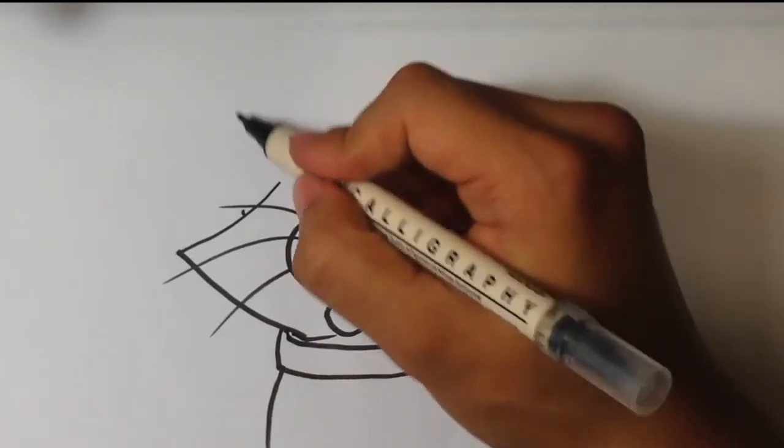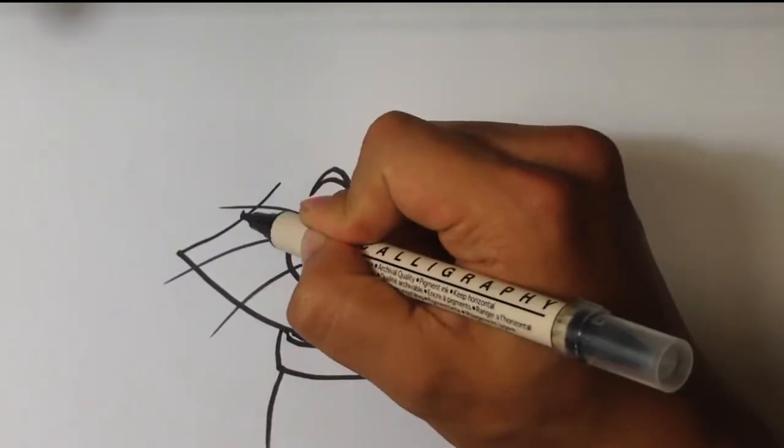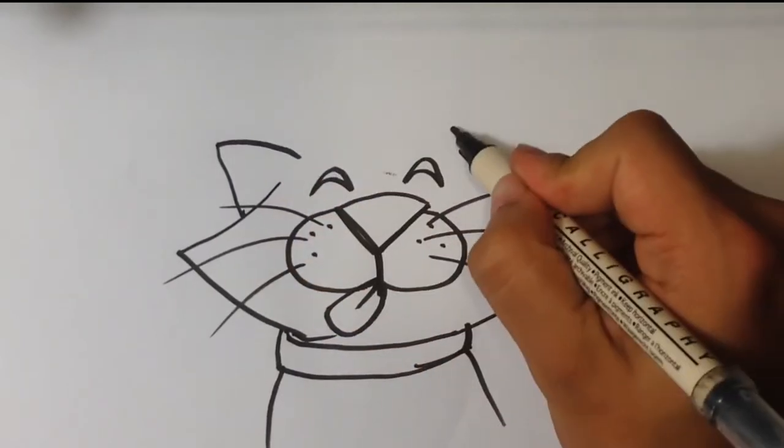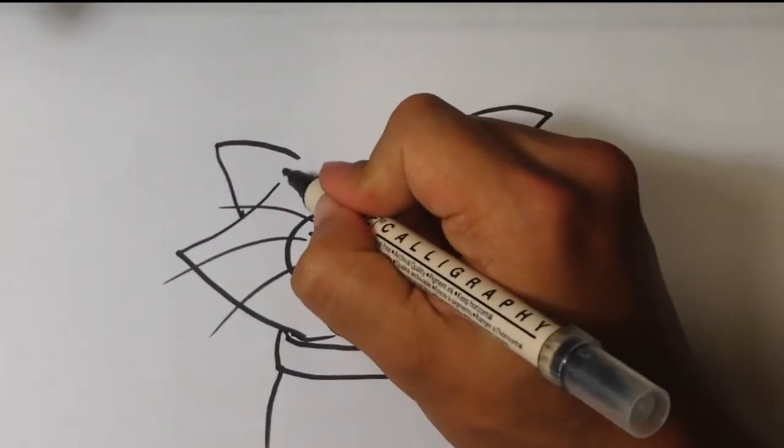And this is kind of the hard part. I'm going to put some ears on here. Basically triangles for ears.